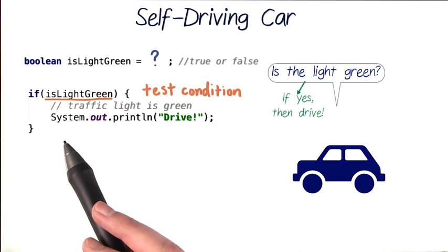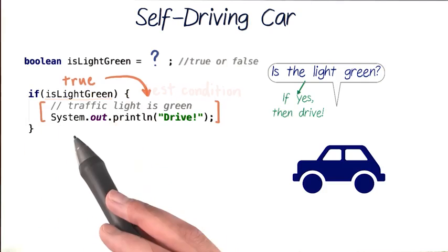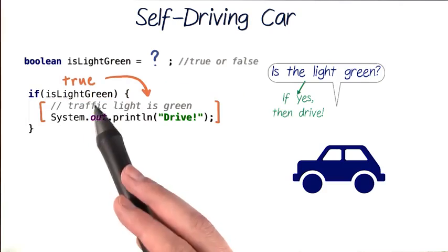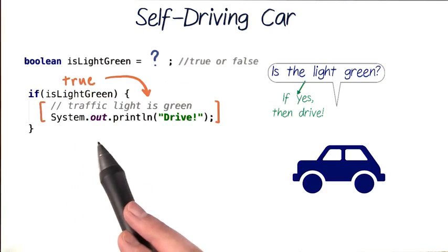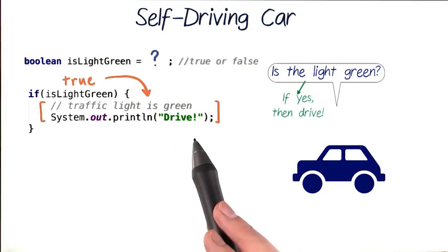We want our test condition to check if isLightGreen is true. So we'll say if isLightGreen. And if this test condition is true, we'll enter whatever code is contained inside the curly braces of our if statement and execute that code.